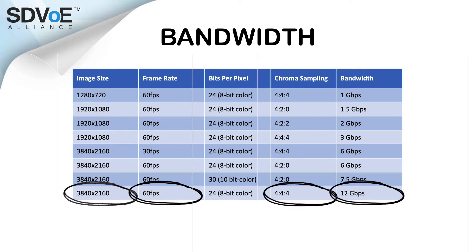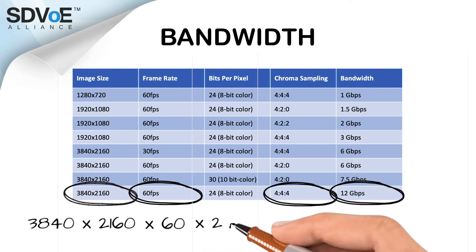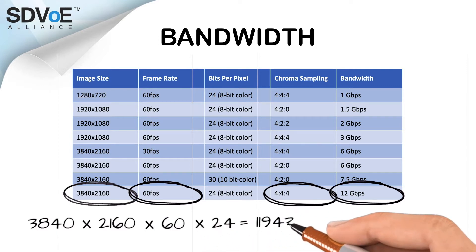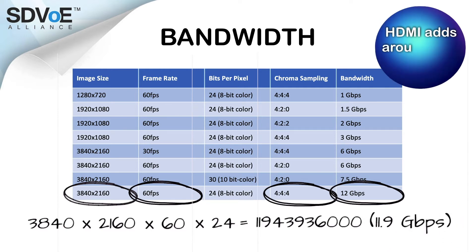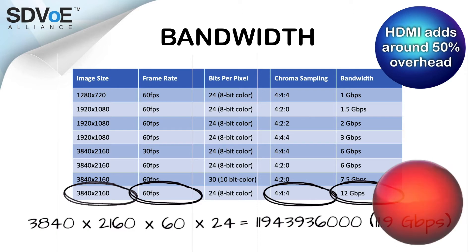This is calculated by taking the image size in pixels, multiplying it by the frame rate, and then multiplying that by the amount of bits in each pixel. HDMI also adds around 50% of extra overhead during the encoding process, and this does not need to be sent across the network. This is why the bandwidth calculation is 12 gigabits per second, rather than the 18 gigabits per second which many people are familiar with.